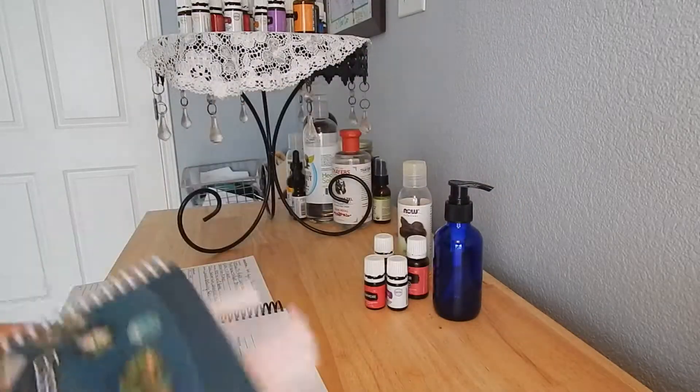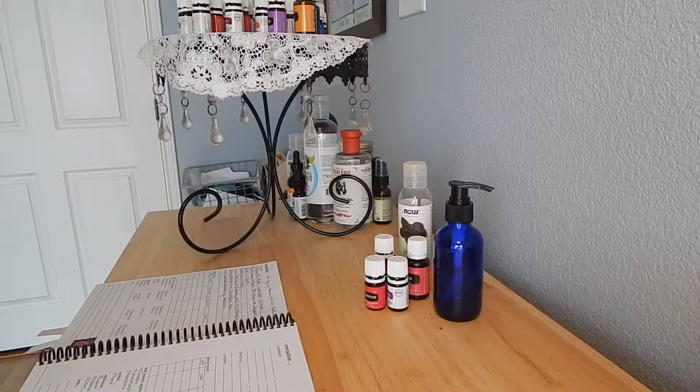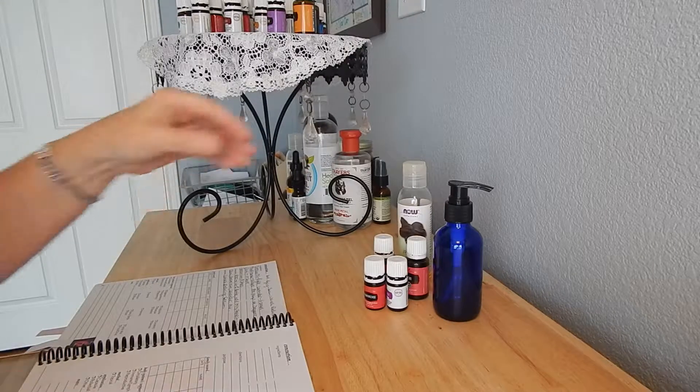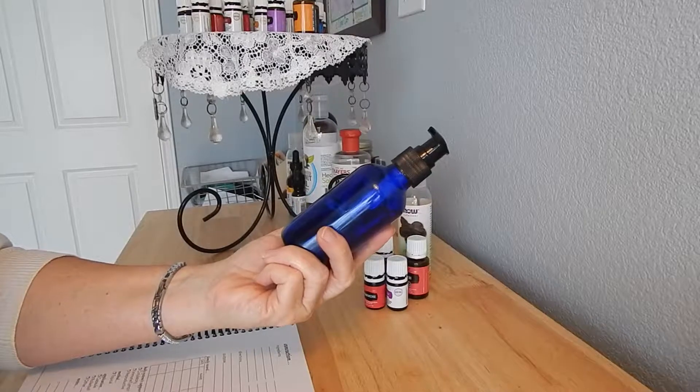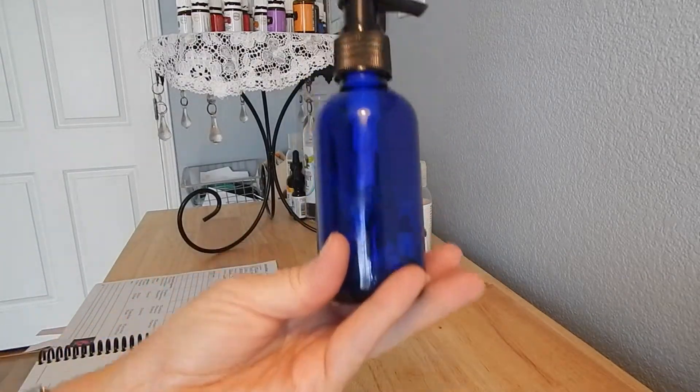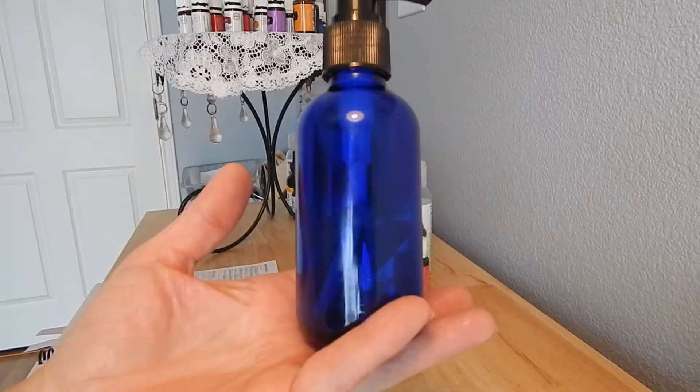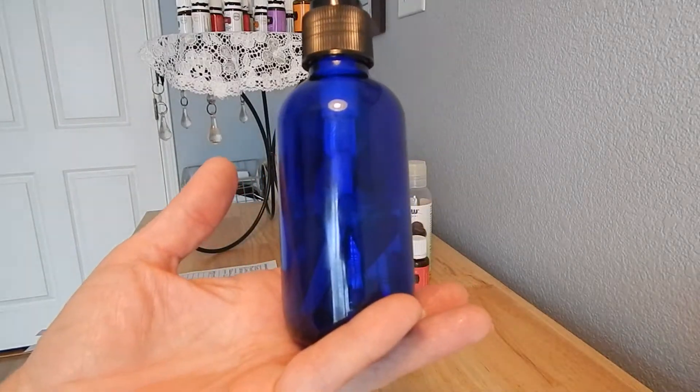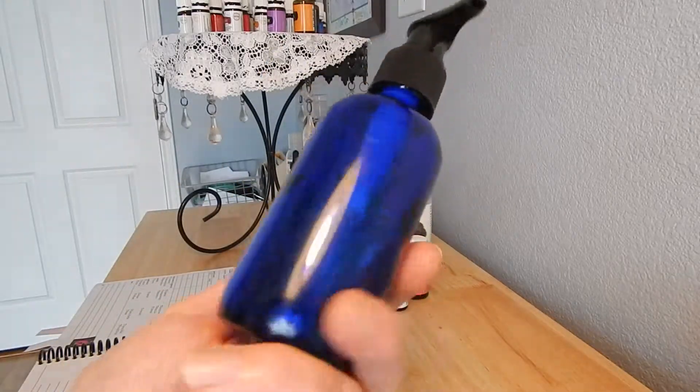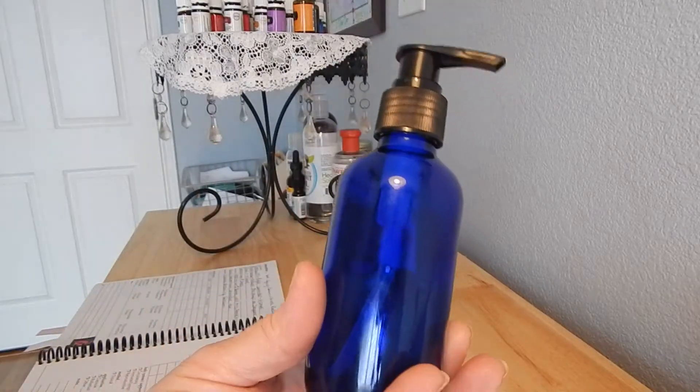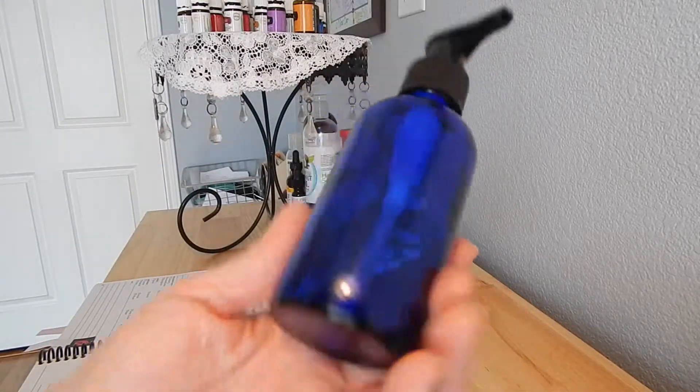Okay, so for our anti-aging wrinkle reducing serum, you're going to want to get probably a six ounce, this is actually an eight ounce bottle, and it's a pump. I probably would do a dropper bottle if you have it. I just have a bunch of these pump bottles that are eight ounces and I need to use them up. I think a six ounce dropper bottle would probably work a lot better.